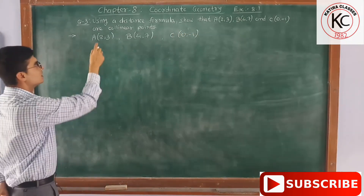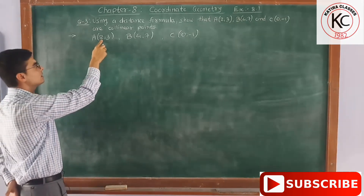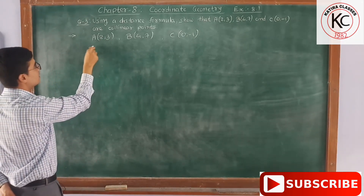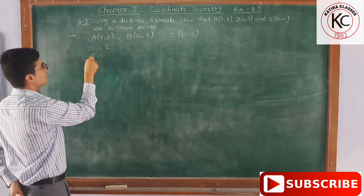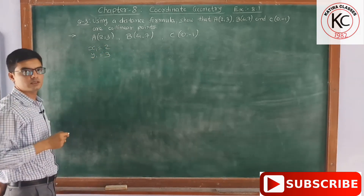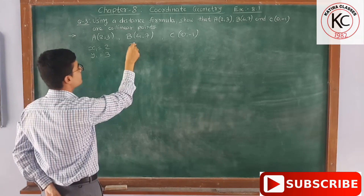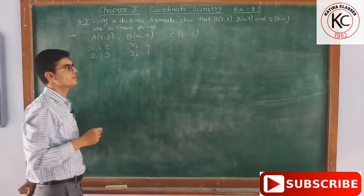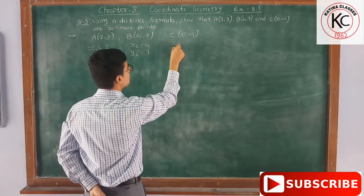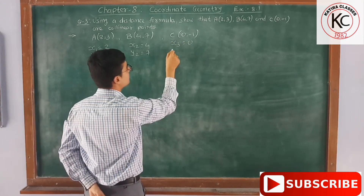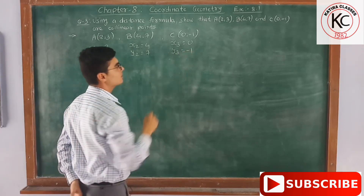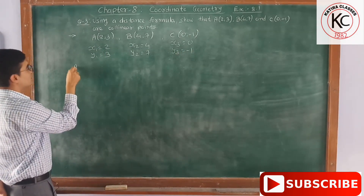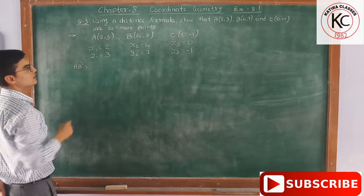As you know, 2 is called the x-coordinate and 3 is called the y-coordinate. So x1 is equal to 2 and y1 is equal to 3. In the same way, x2 is equal to 4 and y2 is equal to 7, and x3 is equal to 0 and y3 is equal to minus 1.